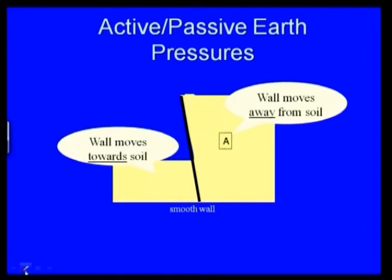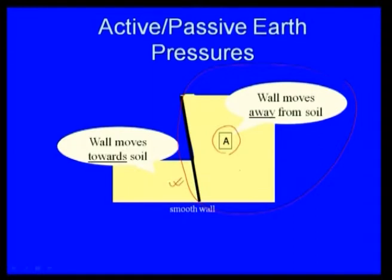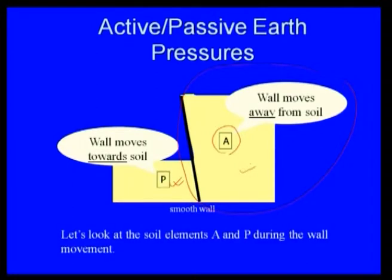Looking at the soil mass, in one domain the wall is moving away from the soil, while in another domain the wall is pushing the soil — that means the wall moves towards the soil. Where the wall moves away from the soil it is called the active state, and where the wall moves towards the soil it is called the passive state.